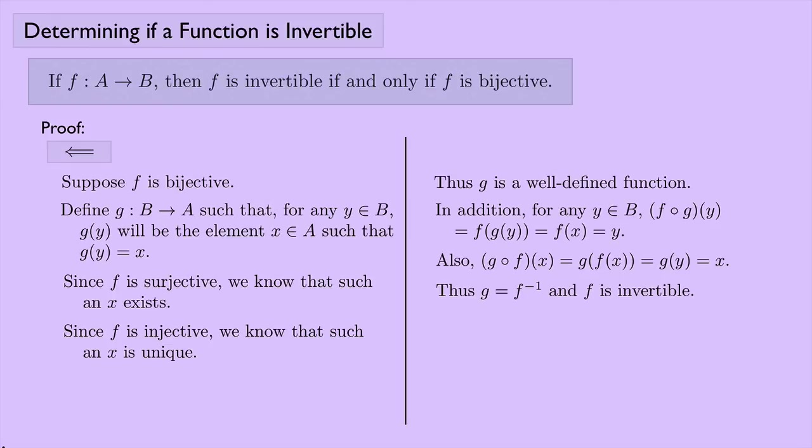This theorem — F is invertible if and only if F is bijective — allows us to tell if a function has an inverse without explicitly finding the inverse. All we need to do is show that the function is bijective.